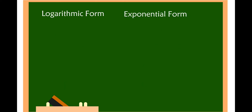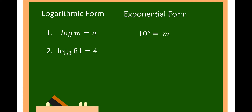In writing logarithmic form into exponential form: for example, we have log of m is equal to n. Since this is a common logarithm, that means this is in base 10, so 10 raised to n is equal to m in exponential form. Then log of 81 to the base of 3 is equal to 4 — the base is 3, the exponent is 4, and the answer is 81 — so in exponential form, 3 raised to the fourth power is equal to 81.